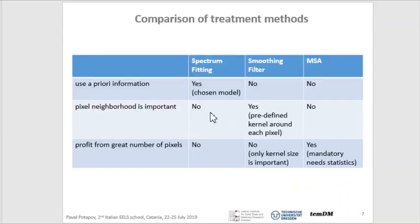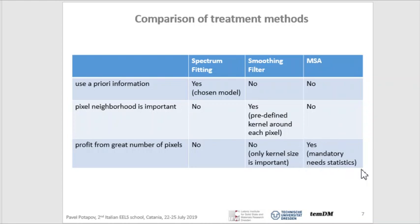In this slide, I compare spectrum fitting, smoothing filter, and MSA according to different criteria: use of a priori information, pixel neighborhood, and the effect of the number of pixels. You see that these three methods are indeed very different — they are in different niches and sometimes even complementary to each other. The most important takeaway is that MSA ultimately requires a lot of statistics as input because MSA is a statistical method.